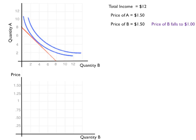Price of B falls to $1. We can use the substitution effect to derive the demand curve.